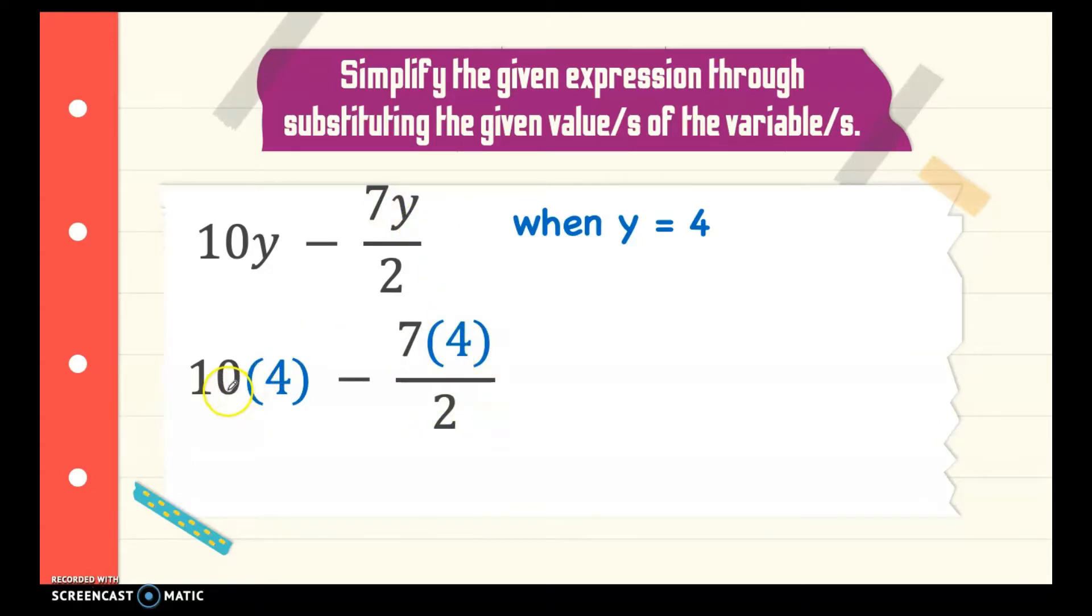We multiply 10 times 4. That is 40. Minus 7 times 4. That is 28. Divide 2. We divide first before we subtract. Follow the order of operation. We have 28 divided by 2. That is 14. When we subtract 40 minus 14 is equal to 26.